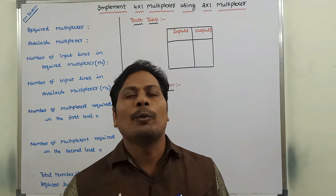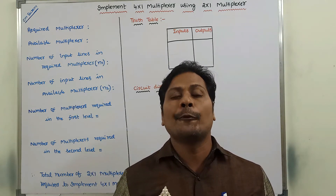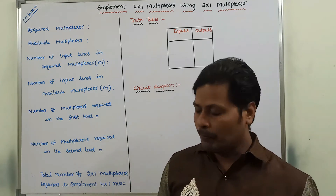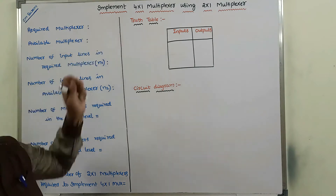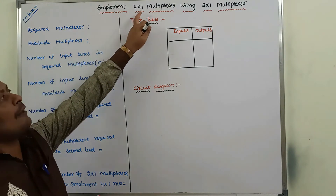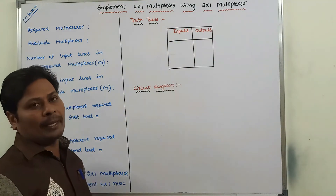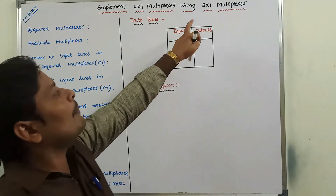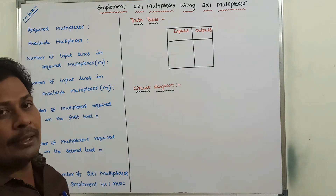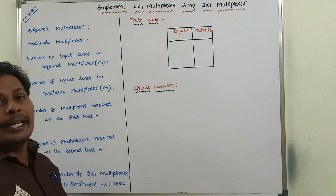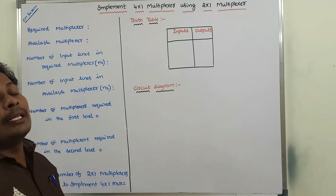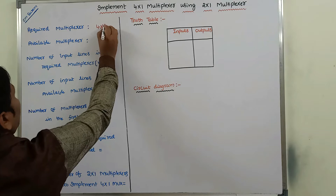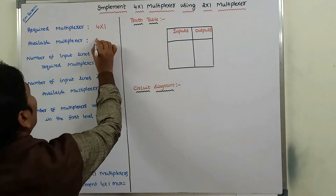In this video we have to discuss about how to implement a 4x1 multiplexer using a lower order multiplexer, that is a 2x1 multiplexer. By observing the given problem, the required multiplexer is the 4x1 multiplexer and the available multiplexer is the 2x1 multiplexer.